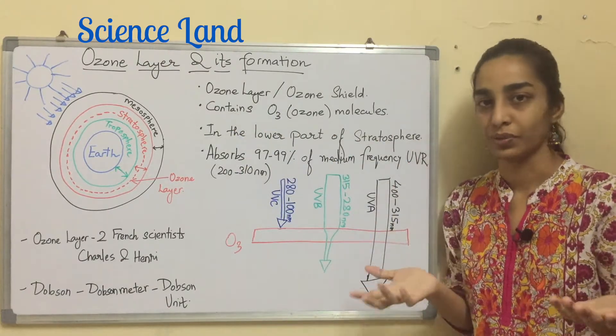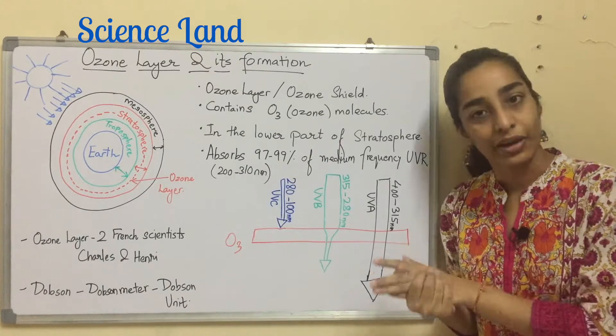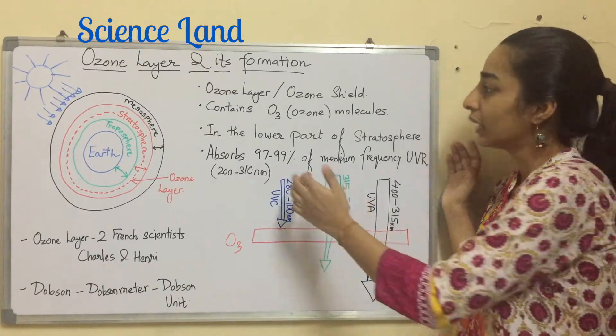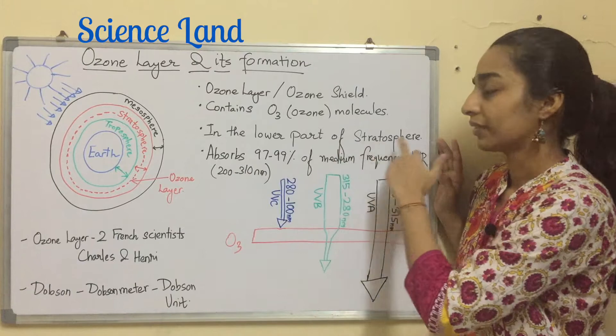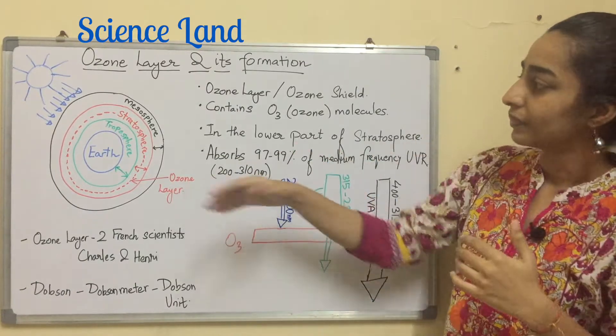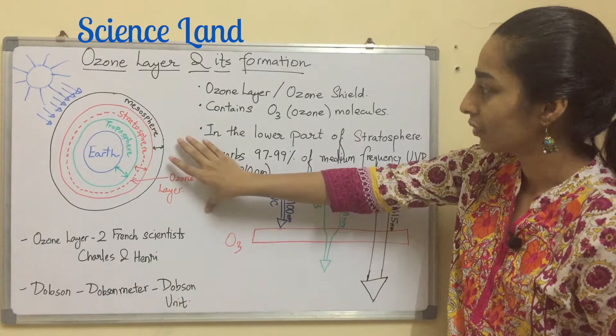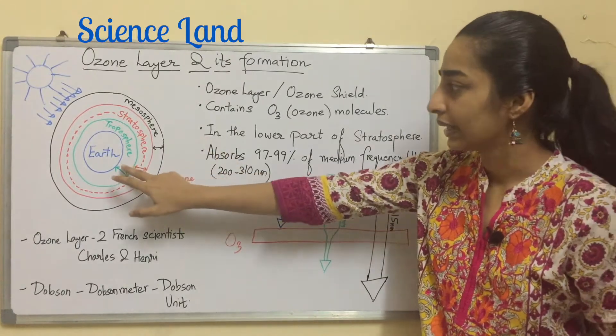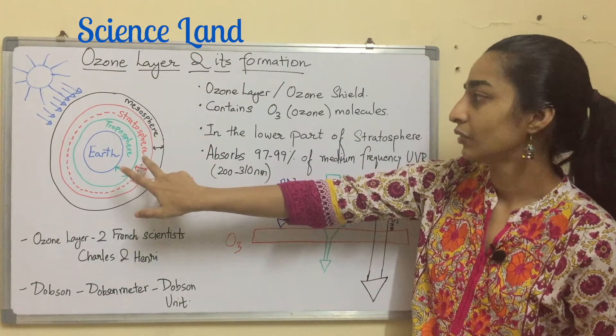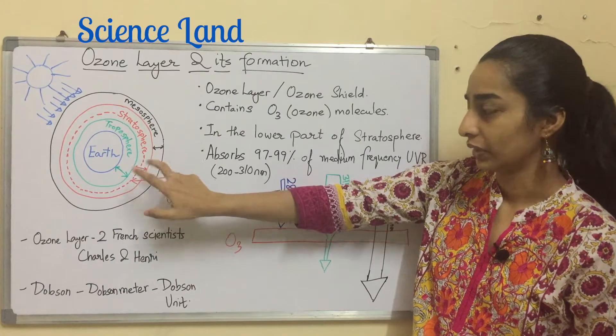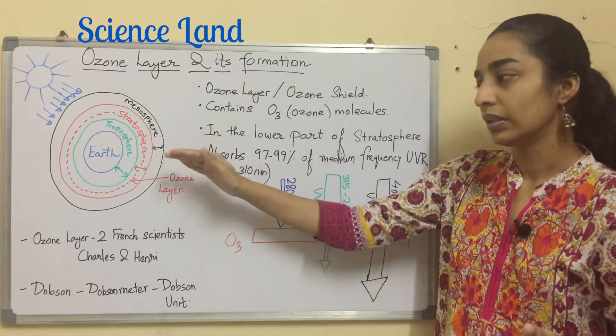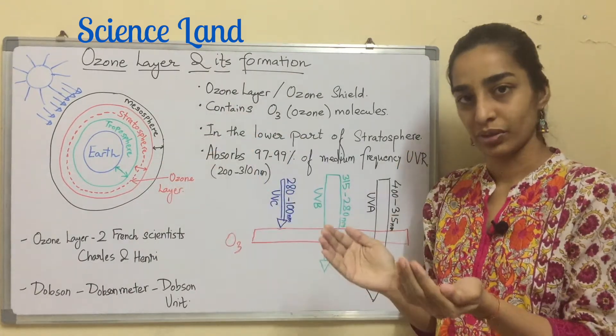O3 is the molecular formula for ozone and O3 is triatomic oxygen. Ozone layer is present in the lower part of the stratosphere. So there are many layers of Earth's atmosphere. I have drawn three layers: the first layer is troposphere, second stratosphere, third mesosphere. Ozone layer is present in the stratosphere in the lower region just above the troposphere.